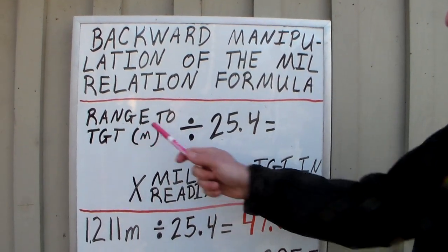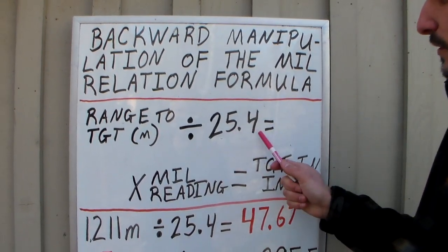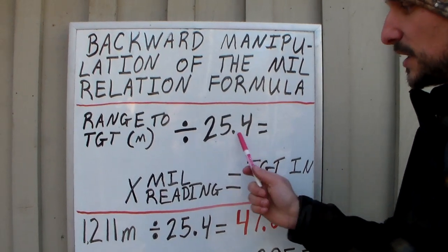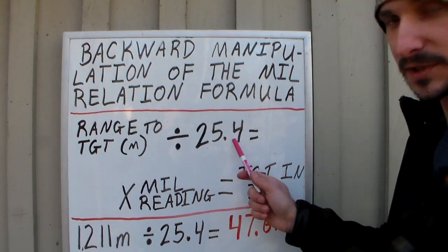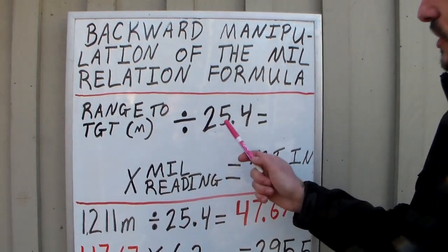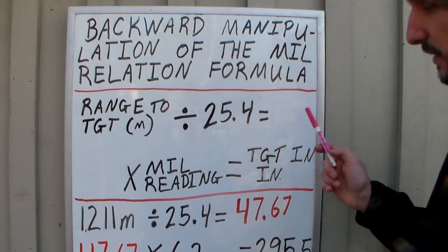So you're going to take that, divide it by 25.4. The 25.4 will not change in this formula. This is going to be a constant. Just like we talked about in the other videos, 25.4 will stay the same. So range to the target in meters divided by 25.4 will give us a number right here. That's the first half of it.